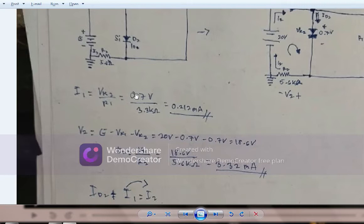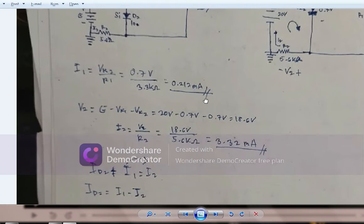The value of i1 equals 0.212 milliamps. So the third step is we need to find the value of i2, which is the total current.